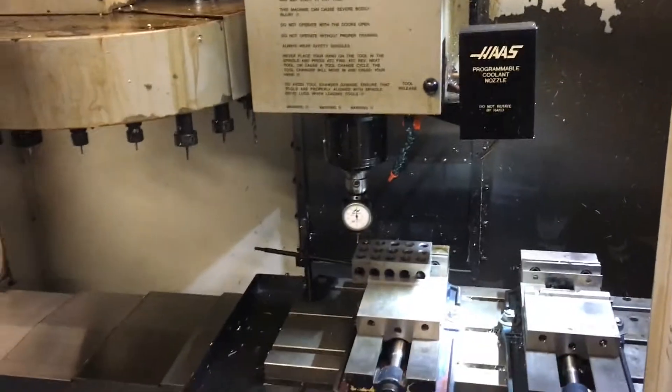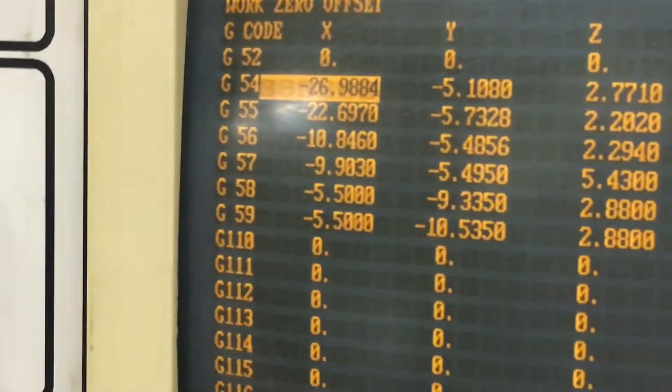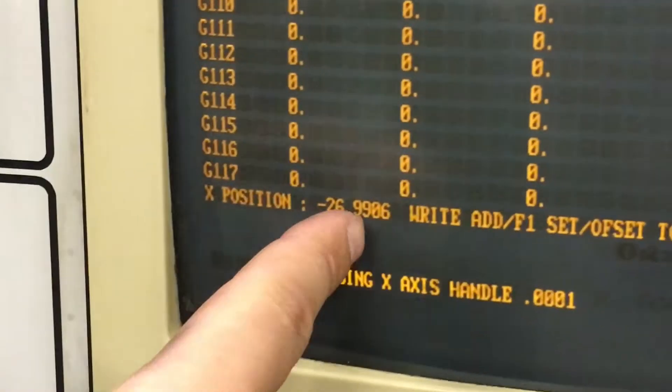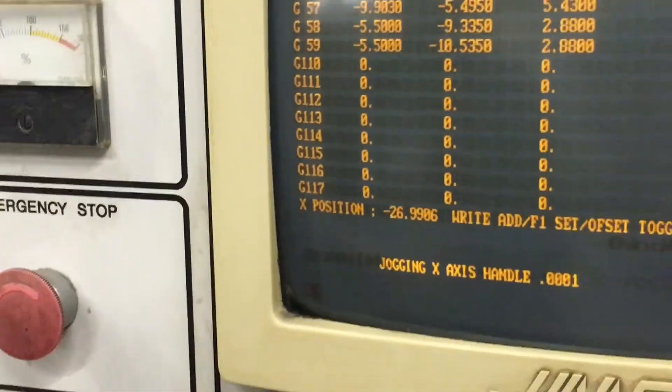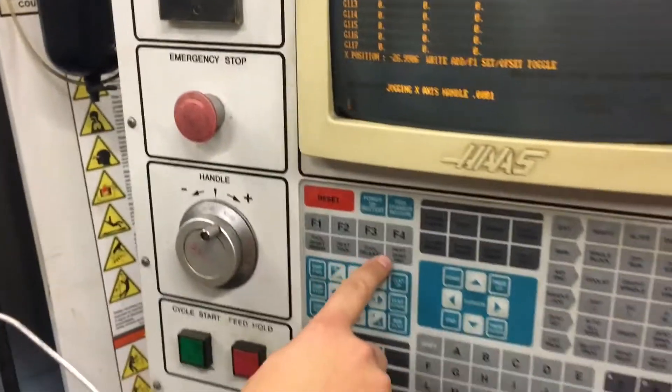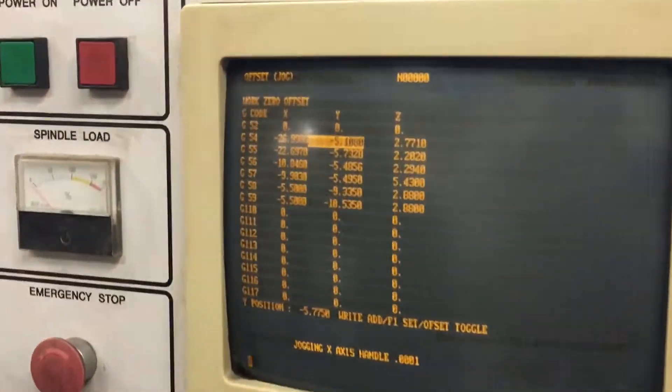Okay, so right here, we're negative 26.9884. We're negative 26.990. So we're 2,000 out. We're just double checking because it's been a while since we loaded this machine. So right from here, I'm going to click part zero set. And it's going to update that automatically.